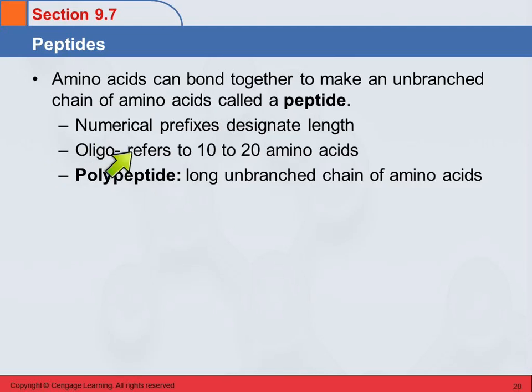If we use the prefix oligo, that's sort of an intermediate size, and they use that to refer to 10 to 20. Then a polypeptide is a longer, unbranched chain of amino acids.